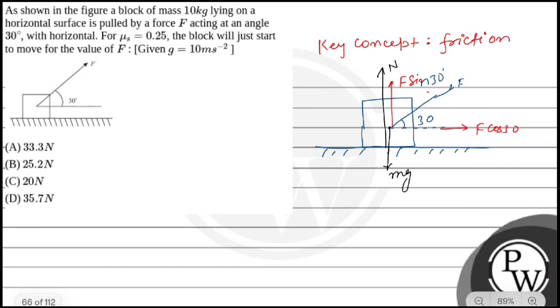Because there's no vertical motion happening, we can say N equals mg minus F sin 30 degrees. So the value is N = mg - F/2, since sin 30 is 1/2.